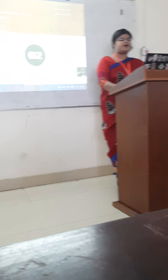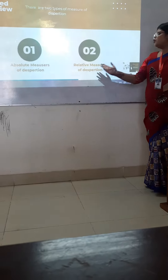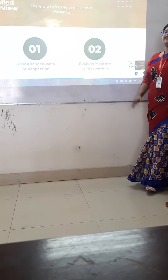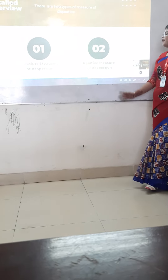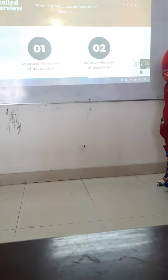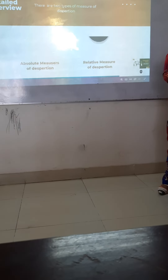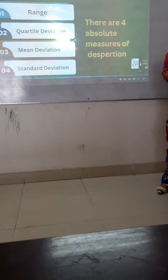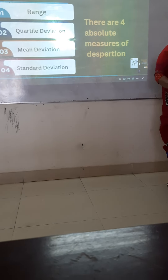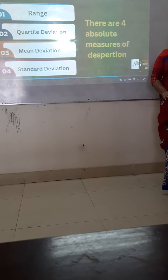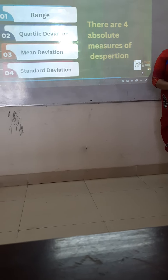There are two types of dispersion: one is absolute dispersion and the second one is relative dispersion. The absolute dispersion has four types.